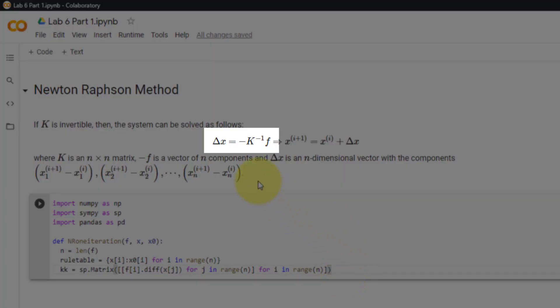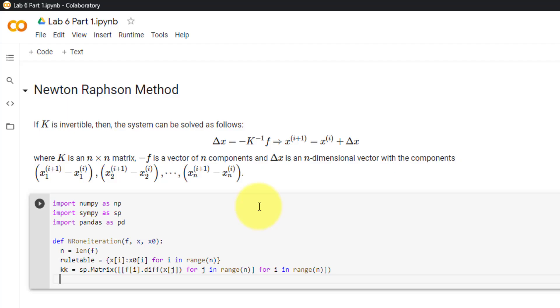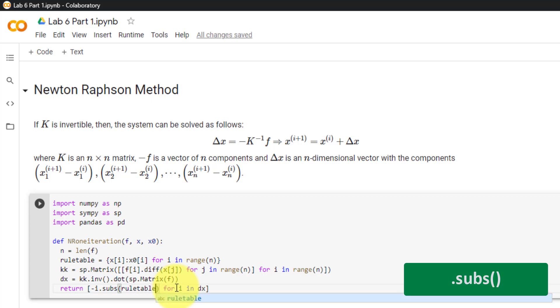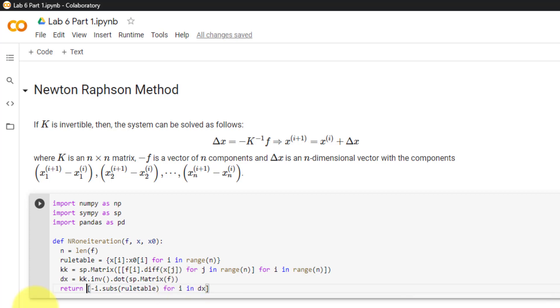Now that we have K, we can refer back to our formula, which states that delta x is equal to negative inverse of K times f. So we can set delta x dx equal to kk dot inv, which is the inverse, dot dot, then sympy dot matrix of f. Finally, we must multiply dx by negative 1 and substitute our rule table. And so we will return this as a list comprehension. We will loop through each of the elements in dx. And for each of the elements i, we will multiply by negative 1 and then substitute our rules table using the subs function. Finally, we will transform our list into a numpy array with the type numpy dot float.